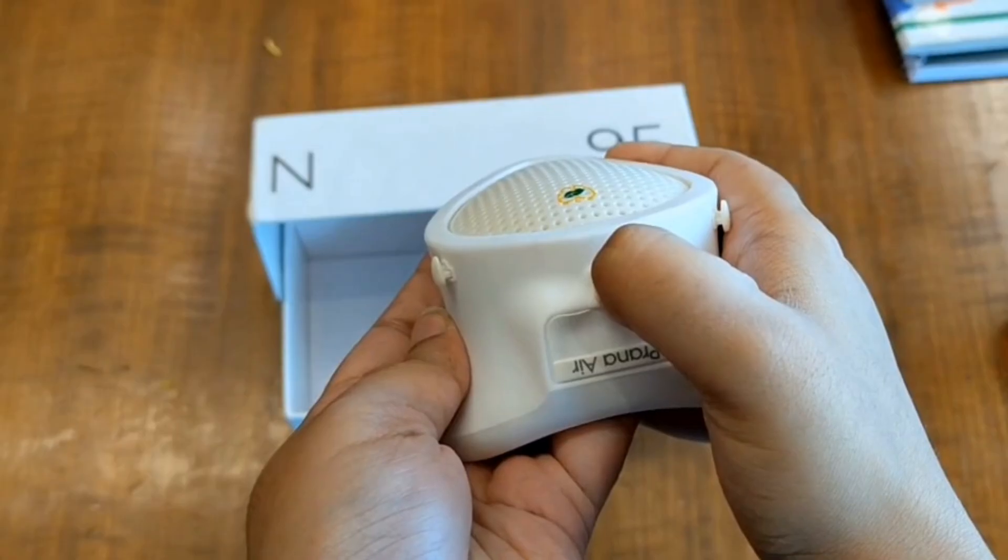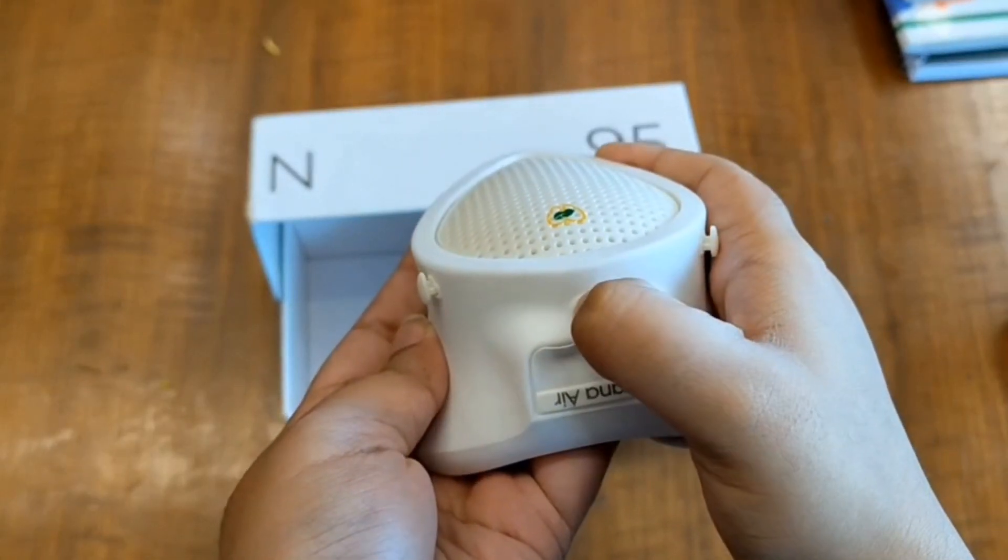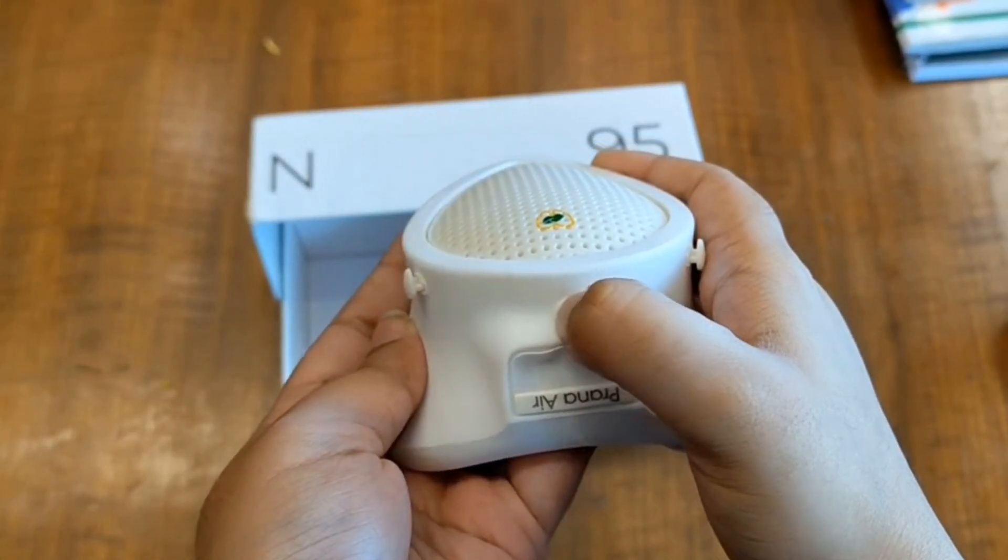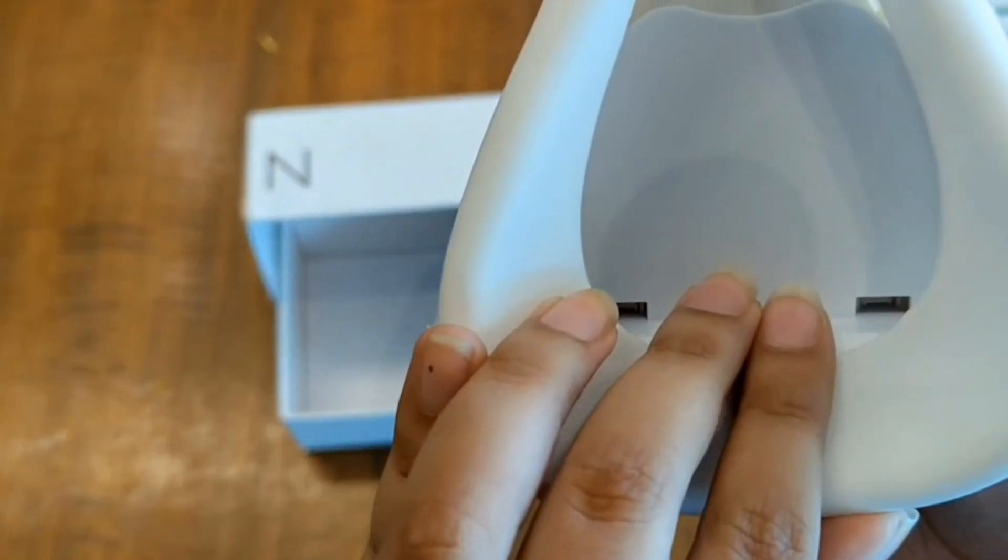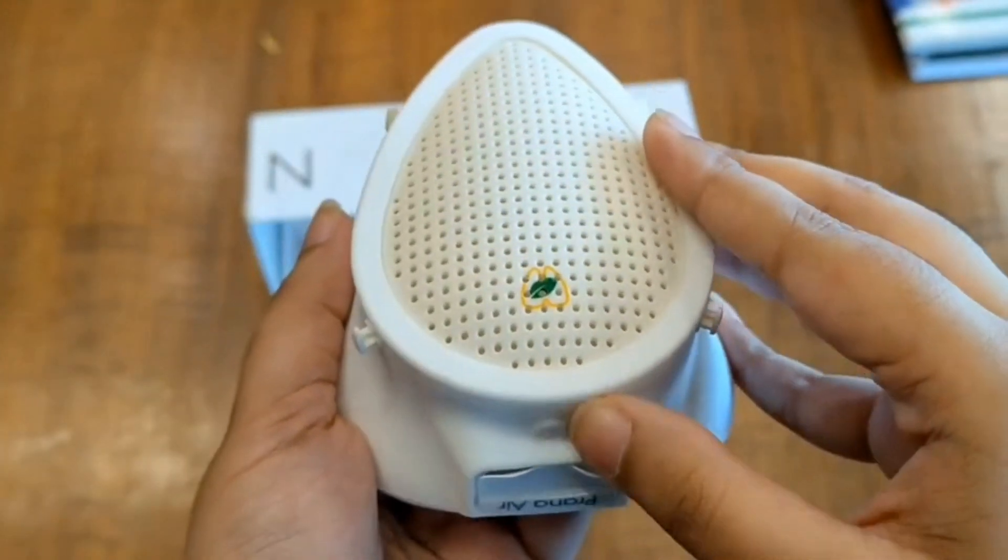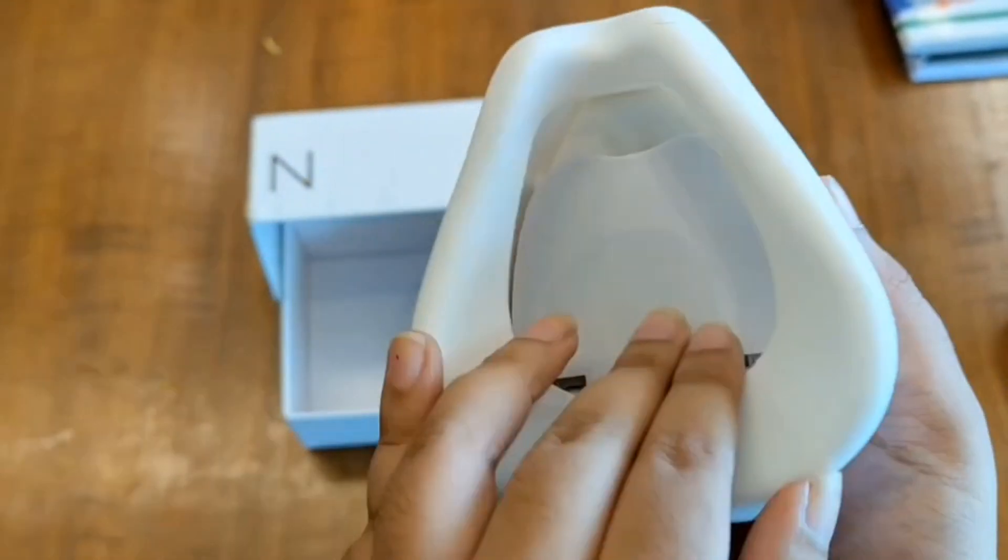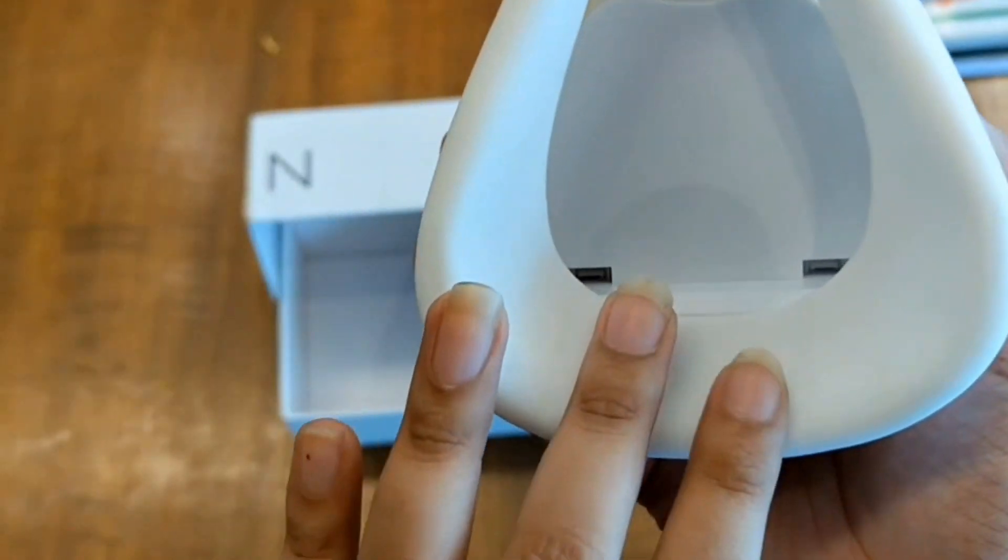To power it on, press and hold the button on the bottom of the mask for a few seconds. You'll hear the fan start. You can press the same button again to change the fan speed. Each press increases the airflow level. Choose the one you're comfortable with.